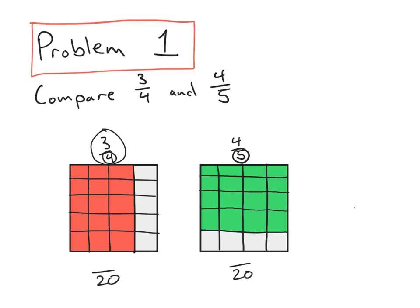If we count up the shaded region of our three-fourths area model, we see that we have fifteen-twentieths. And if we count up the shaded regions of our four-fifths area model, we see we have sixteen-twentieths. Now we can compare these two very easily because we've created two fractions with the same denominator, and it's clear to see that fifteen-twentieths is less than sixteen-twentieths.